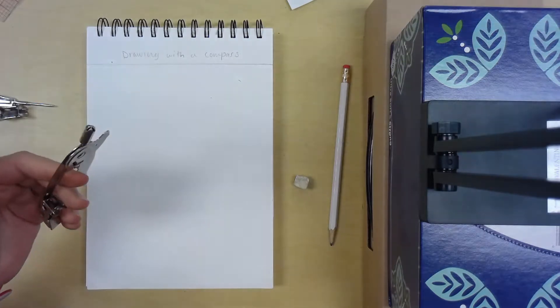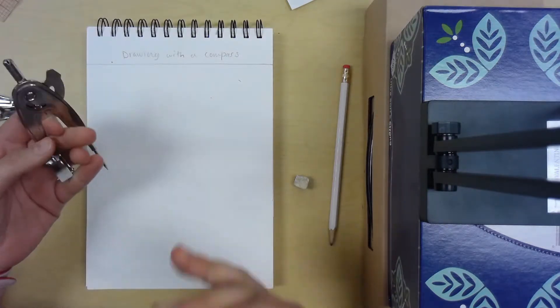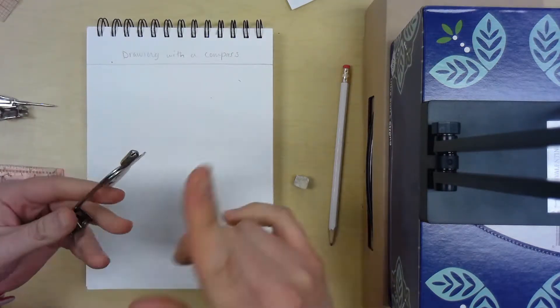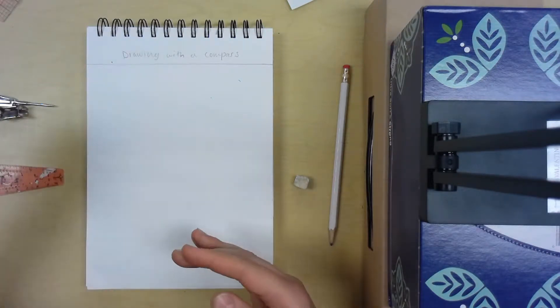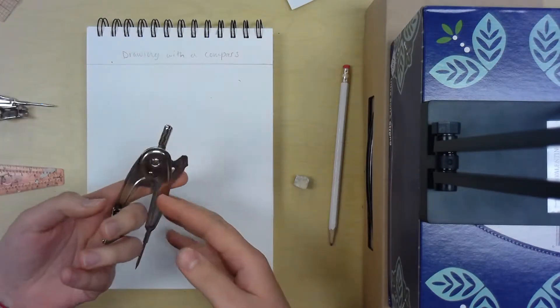Lots of people I've seen like to trace around something circular like a can or a bottle, and sometimes you can get off those circles and then you mess up your circle and it turns into an oval or some weird shape. So I'm going to show you how to use a compass.